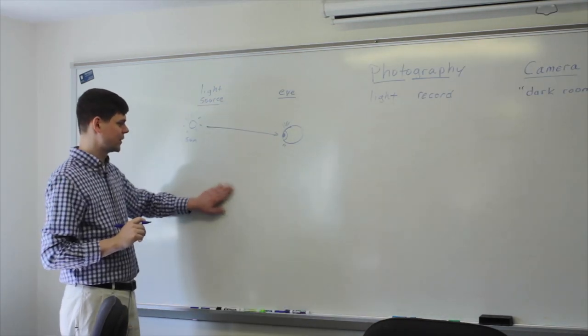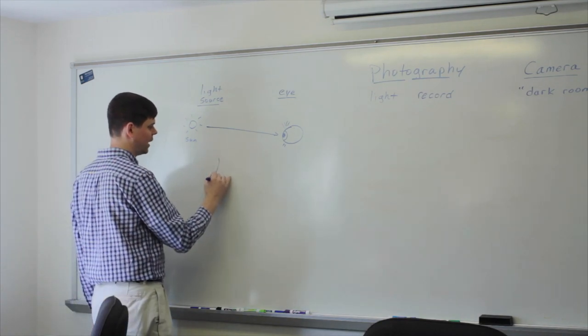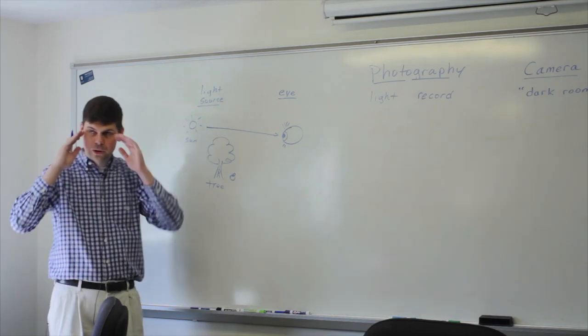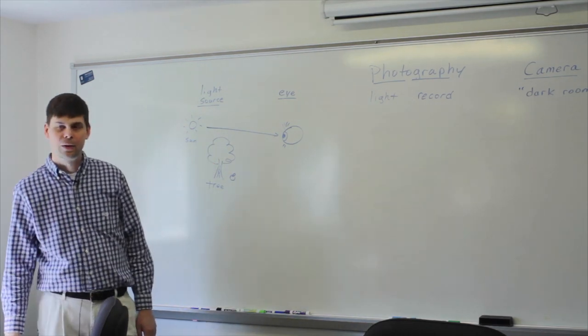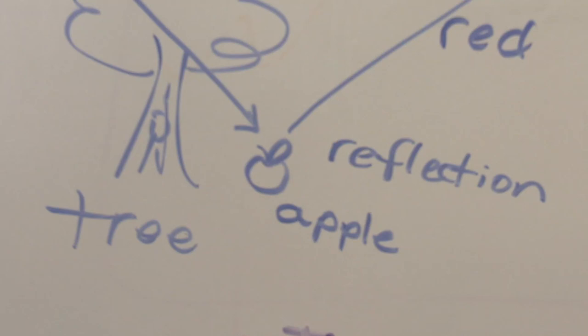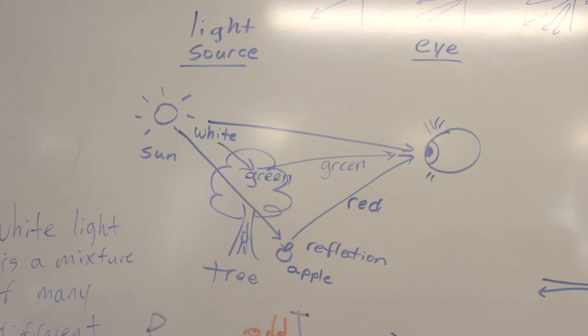But what about other objects that we see in the environment? Let's say there's a tree. How about an apple? When we see these objects with our eyes, what are we really seeing? You're seeing light. That's correct. When you look at an apple, the apple is not going into your eye. What's going into your eye is light, and the way that it goes into your eye is it reflects off of the apple and then enters your eye.